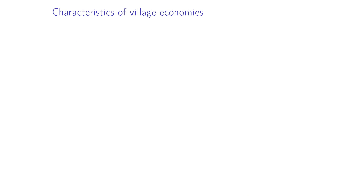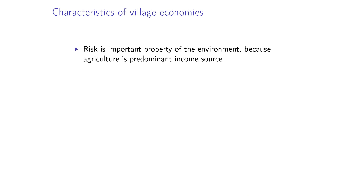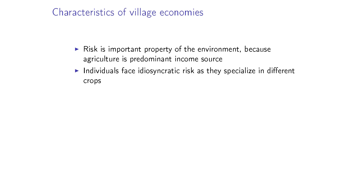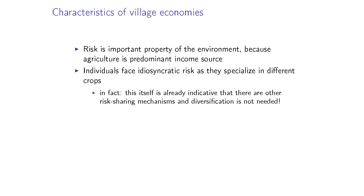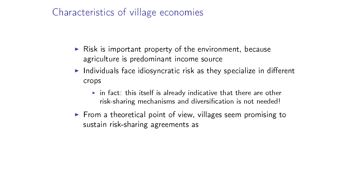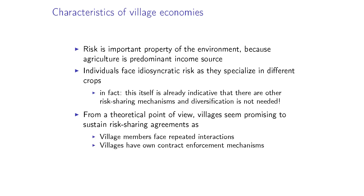Characteristics of village economies in India: it's a very risky place, in large part because agriculture does not provide a stable source of income. There's a lot of risk — idiosyncratic and aggregate. Households diversify in many ways, including not planting all the same crop. We'll use a benchmark that assumes no information problems, no moral hazard, no contract enforcement problems. Today we'll see how well this theory does without any of these frictions.